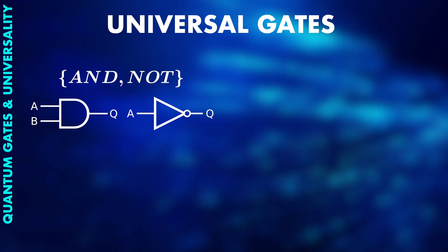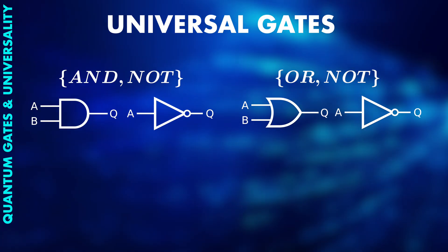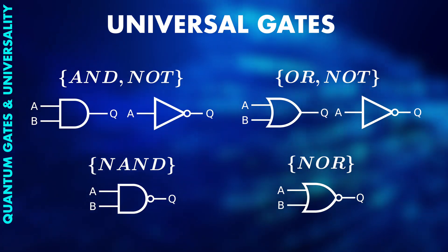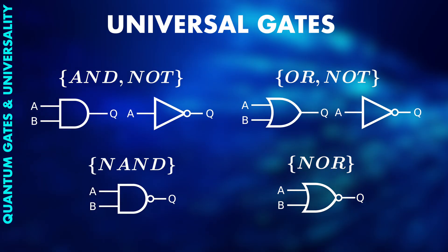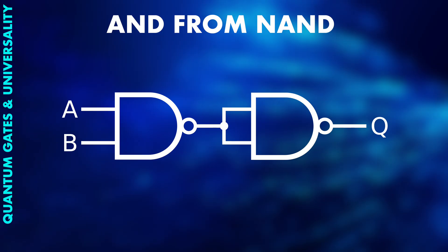For example, AND and NOT is a universal set or OR and NOT. Some gates are even universal just by themselves, like NAND or NOR. So you can recreate the effects of any imaginable circuit by just using NAND gates. For example, this is a NOT.